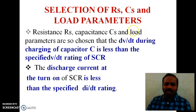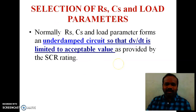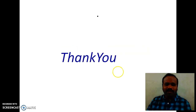Selection of series resistance RS, series capacitance CS, and load parameters: RS, CS, and load parameters are chosen such that the dV/dt during charging of the capacitor is less than the specified dV/dt rating of the SCR. Similarly, the discharge current at turn-on of the SCR is less than the specified di/dt rating. Normally, these three components — RS, CS, and load parameter — form an under-damped circuit so that dV/dt is limited to an acceptable value as provided by the SCR rating. Thank you.